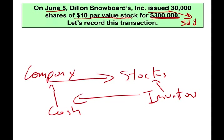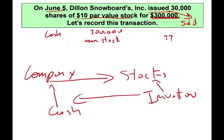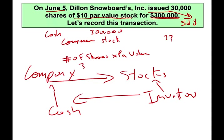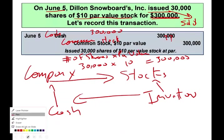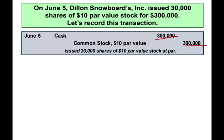Let's record this transaction. We received $300,000 in cash, so we debit cash $300,000. Since we issued common stock, we credit common stock. Common stock equals number of shares times the par value: 30,000 shares times $10 par value equals $300,000. Therefore, the entry is: debit cash $300,000, credit common stock $300,000.